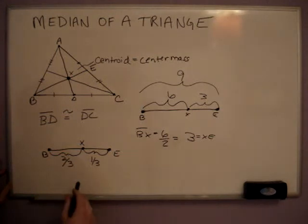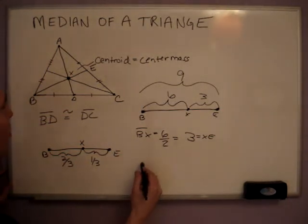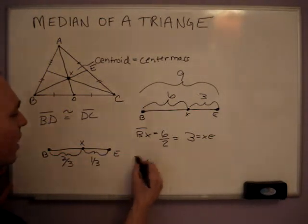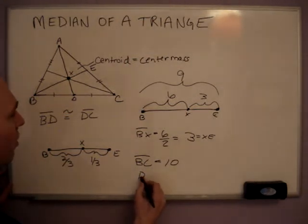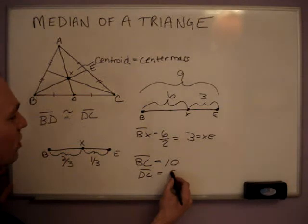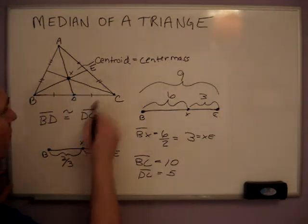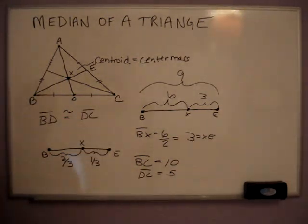And a lot of times a problem will be if BC, line segment BC, is 10, what's the length of DC? And, of course, it's five because it bisects it in half. So that pretty much covers the median of a triangle.